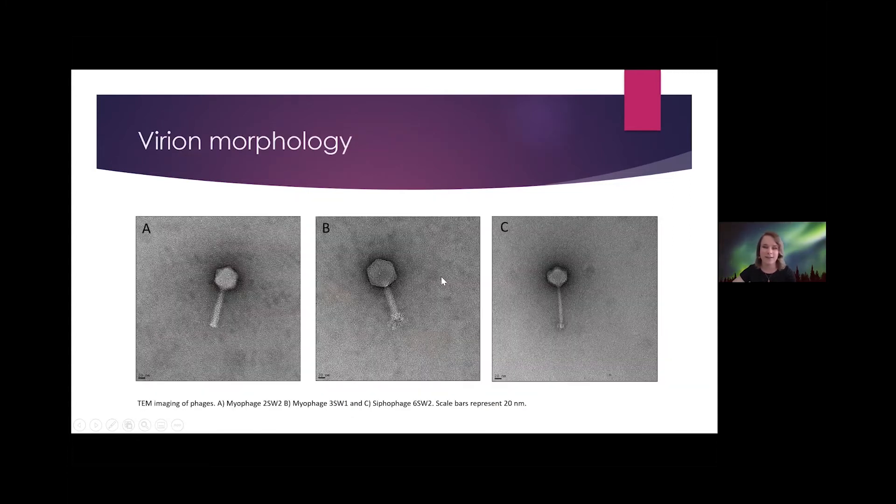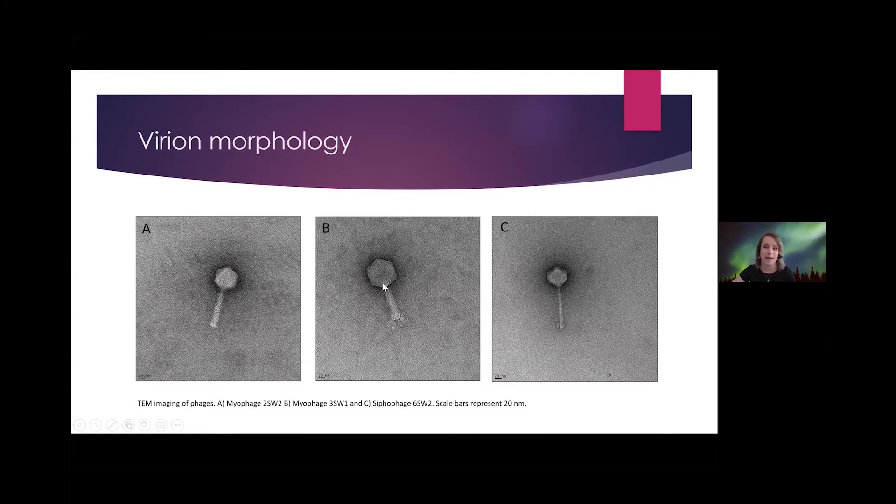We subjected these seven phages to transmission electron microscopy, though as you can see from these three figures, that didn't work out terribly well. Only three of them actually showed up in our micrographs, so we plan to redo this. A and B here show two phages of the Myoviridae family, which means they have long contractile tails, as you can kind of see underneath that dice-looking structure. And then C here is a member of the Siphoviridae, which means it just has a long non-contractile tail.